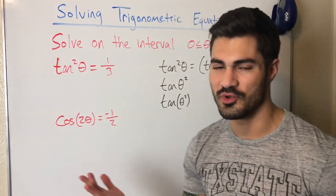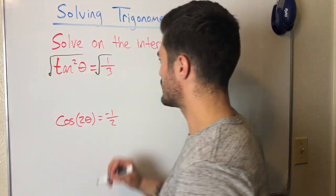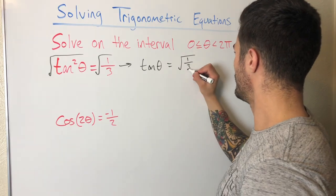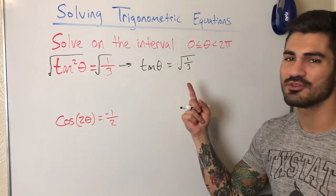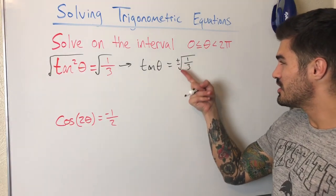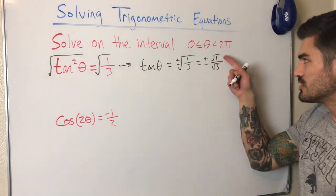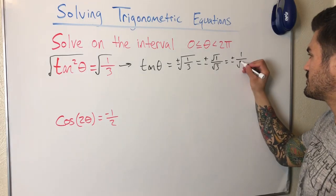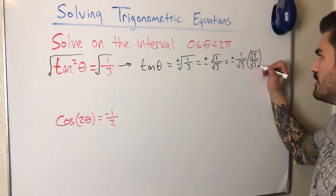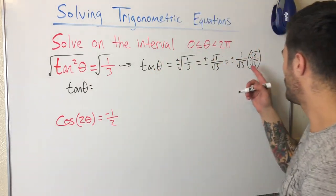Here's the key mistake students make: when you square root both sides, you must include plus or minus. So tangent theta equals plus or minus the square root of one third. Splitting the square root: plus or minus one over root three. Rationalizing the denominator by multiplying top and bottom by root three gives tangent theta equals plus or minus root three over three — a value recognizable from the unit circle.